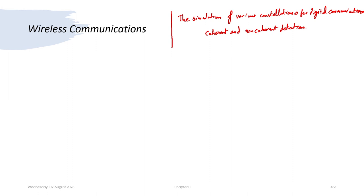If we talk about simple communication systems or what is covered in a digital communications course, this is slightly more than half of the course because the other half talks about intersymbol interference and equalization. A course on wireless communications or modern 3G, 4G, 5G, and 6G wireless communications — we are currently implementing 5G when these lectures are being recorded and have actively started working towards 6G.